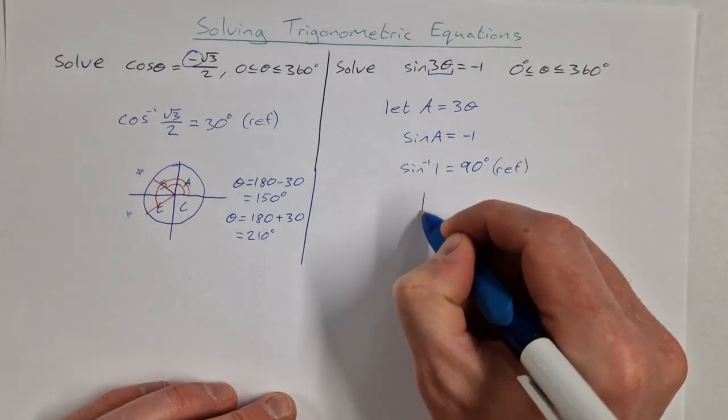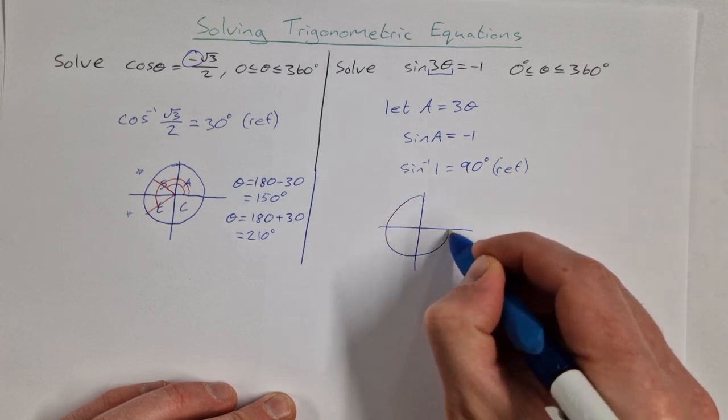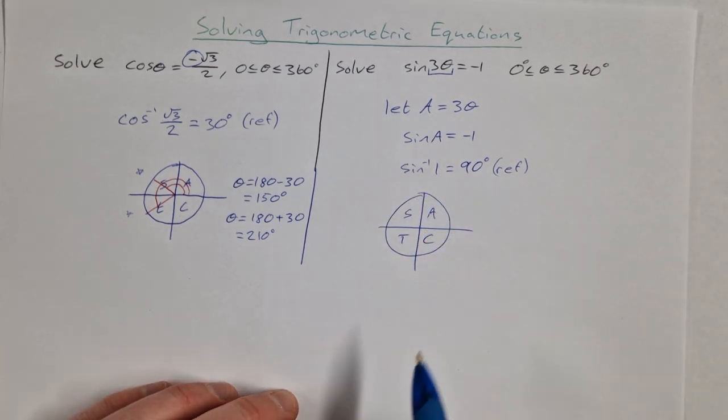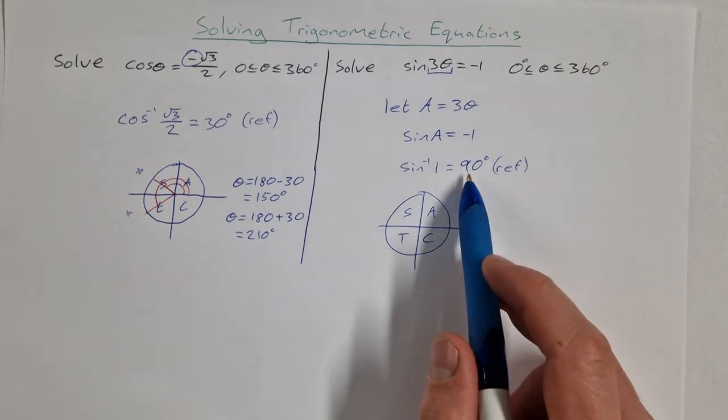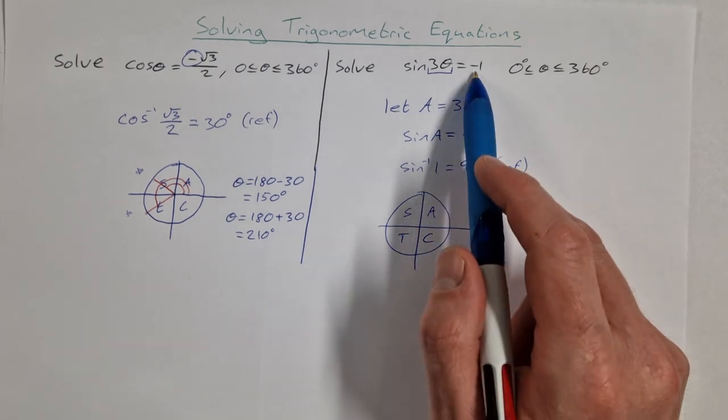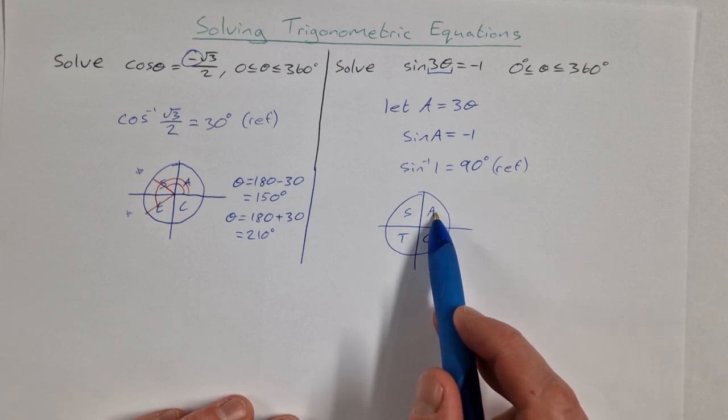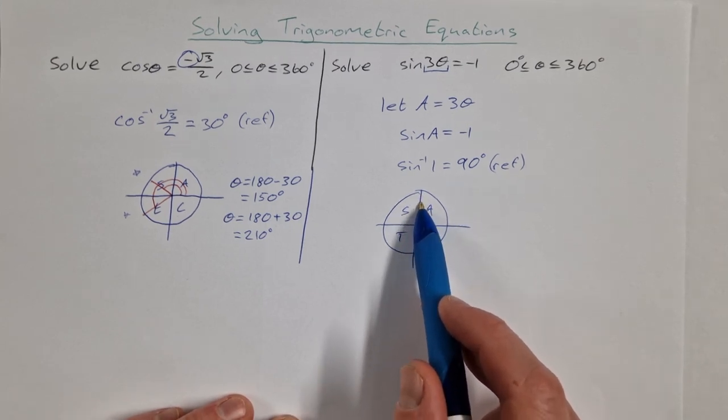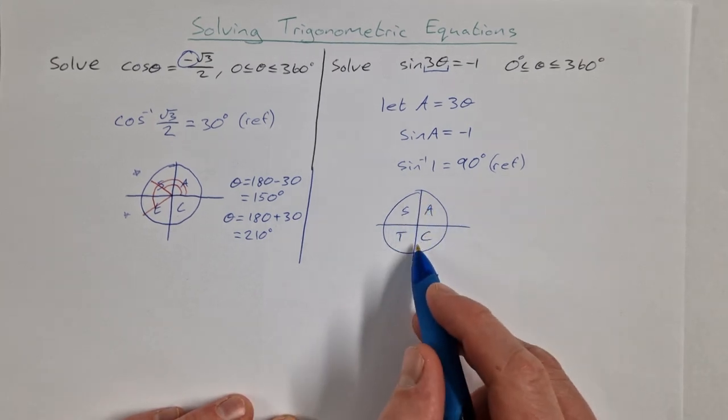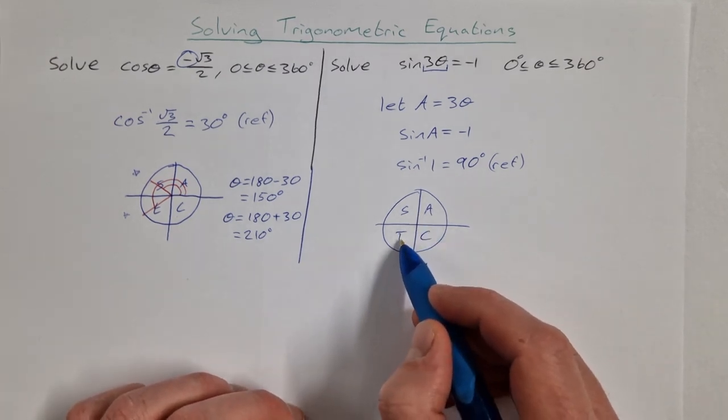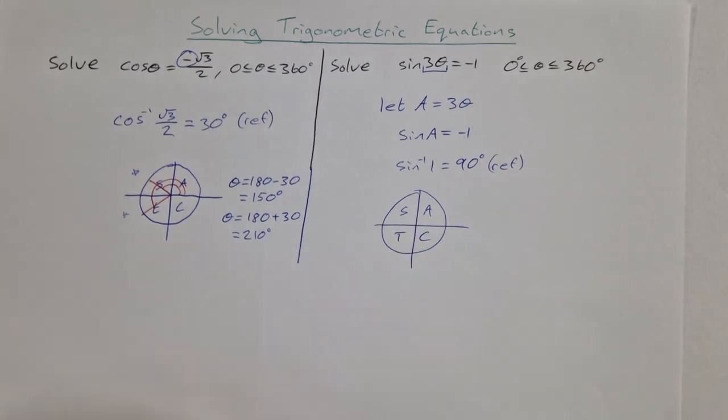We're going to draw our unit circle again and CAST. And we're looking for where is sine negative. So sine was negative originally. Well, sine is positive in quadrant 1 and 2, 90 degrees is between them, so that's positive. So it's negative down here at the y-axis between T and C. So I'll draw in where it is.